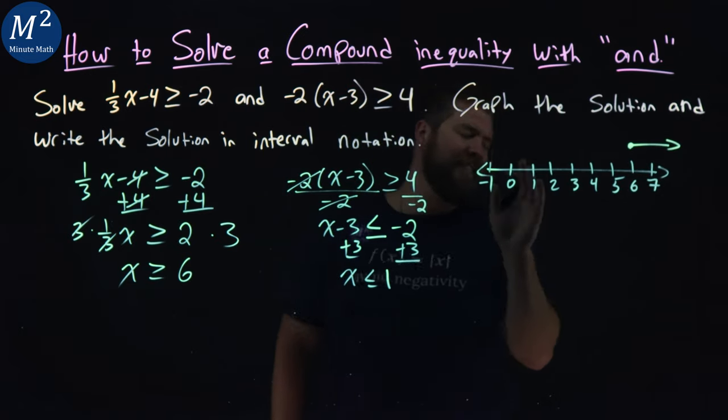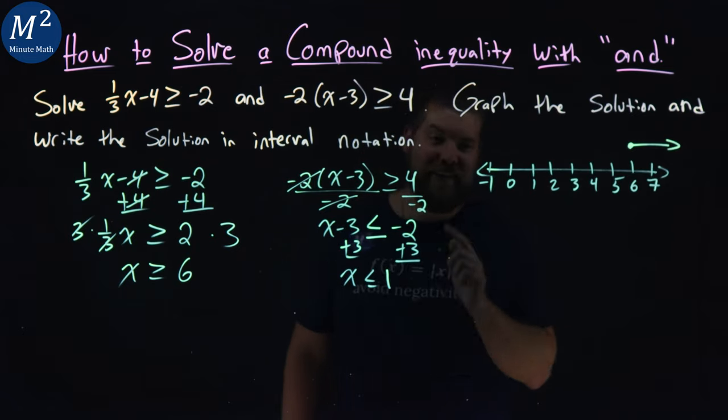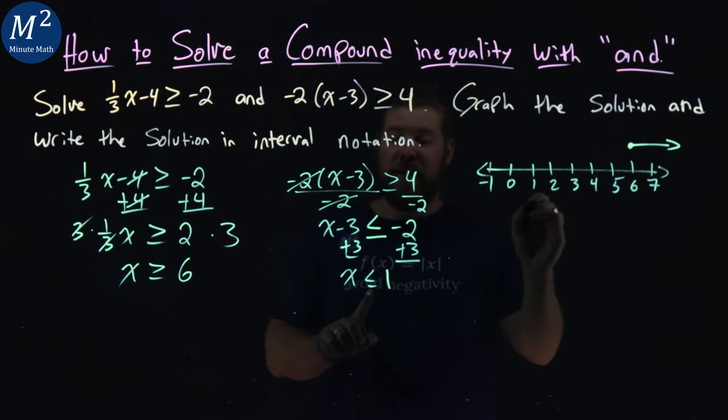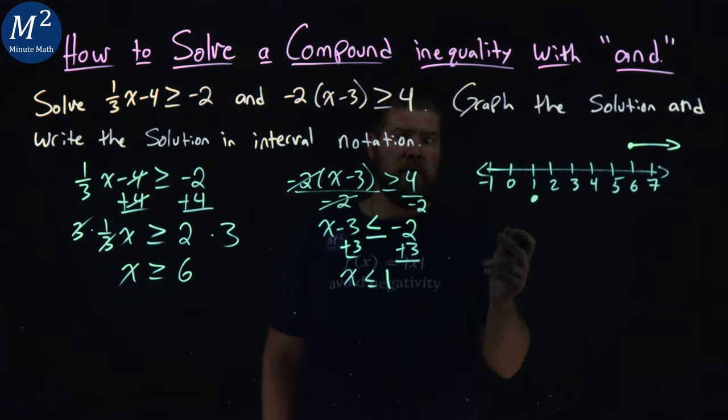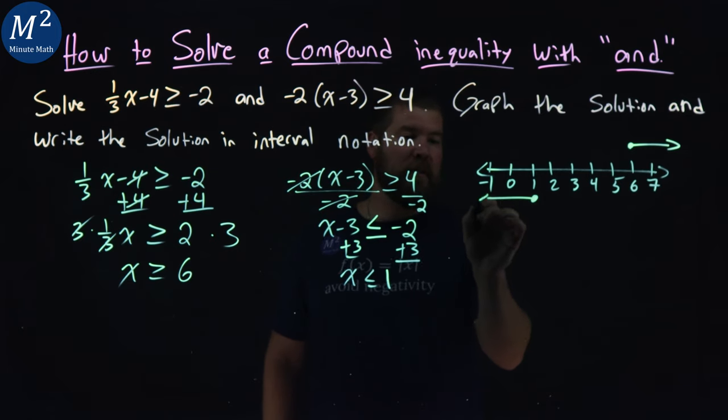Now I'll go underneath the number line here. We have x ≤ 1. We look at 1 here, and since it could equal 1, we have a closed circle. From there, since we are less than 1, our arrow goes to the left.